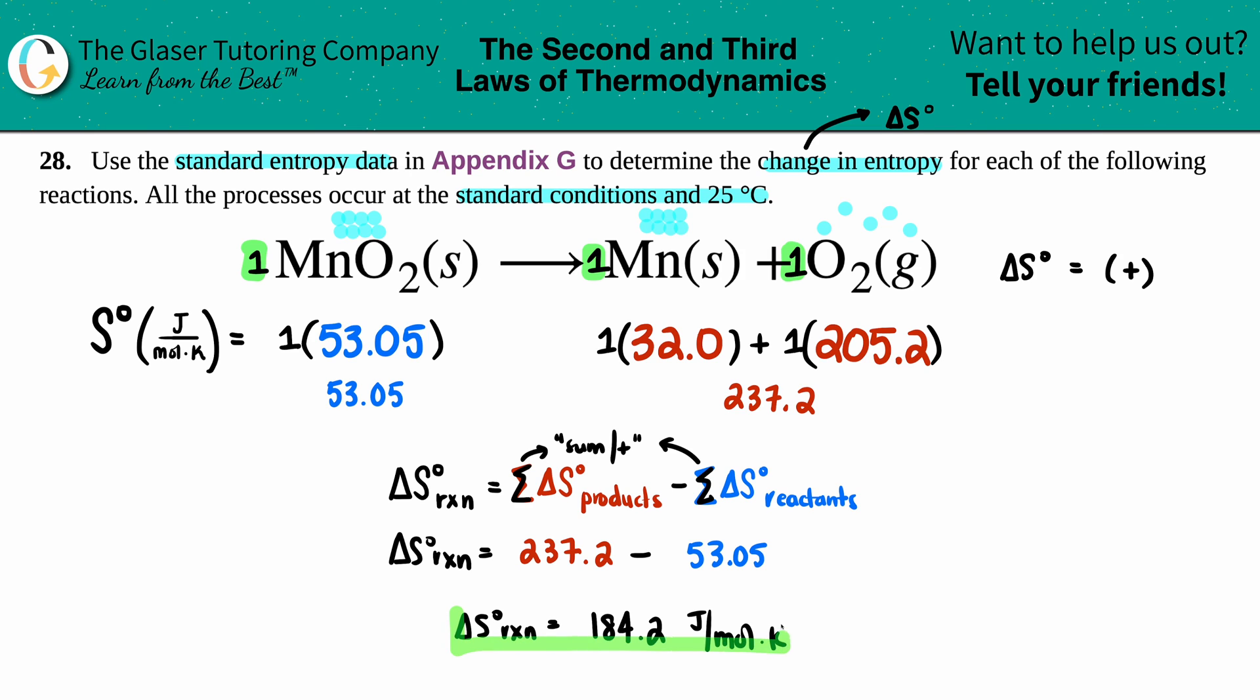And that's the end. So it's a positive entropy value—you're gaining entropy, you're becoming more random, more chaotic as you produce your products, which makes sense. You got a gas there.